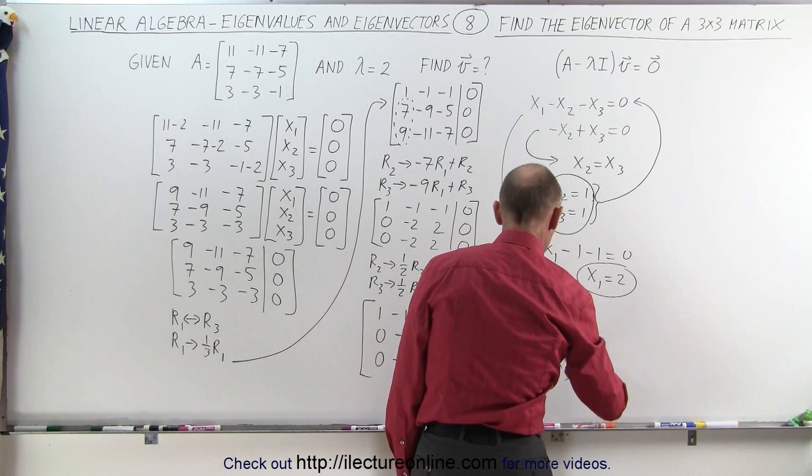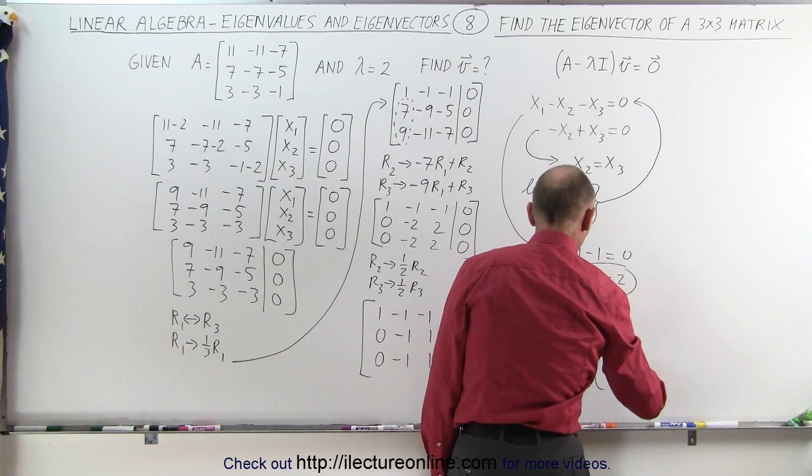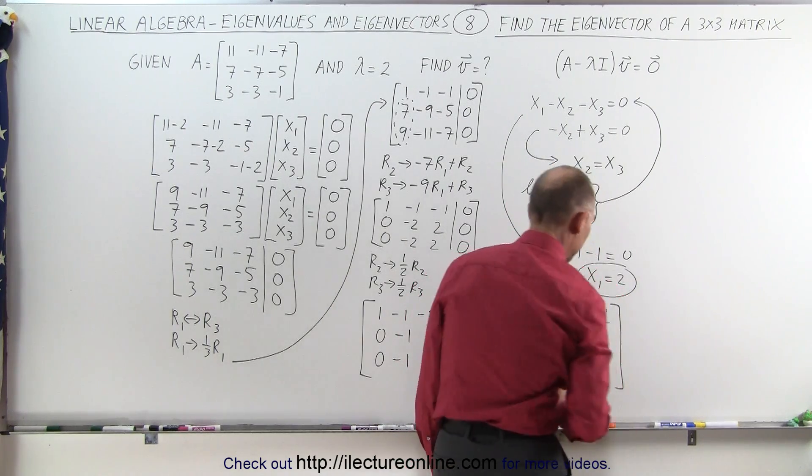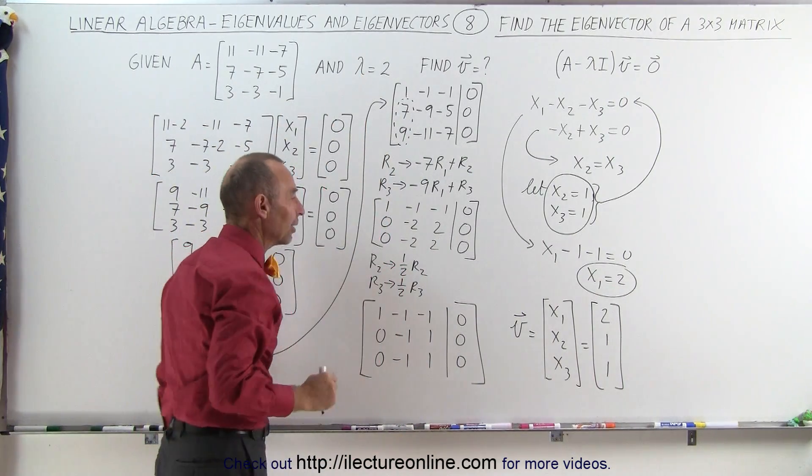Well, that would be the three variables, x1, x2, x3, which then can be written as 2, 1, and 1. And that is the appropriate eigenvector for this matrix with this eigenvalue.